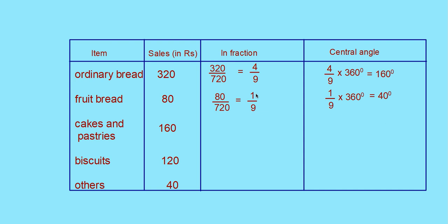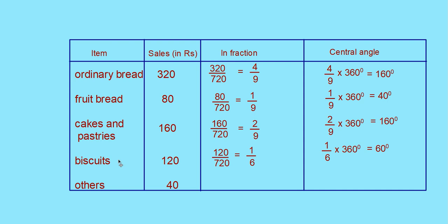Fruit bread: 80 by 720 equals 1 by 9, and 1 by 9 into 360 gives a central angle of 40 degrees. Cakes and pastries: 160 by 720 equals 2 by 9, and 2 by 9 into 360 gives 80 degrees. Biscuits: 120 by 720 equals 1 by 6, and 1 by 6 into 360 gives 60 degrees. Others: 40 by 720 equals 1 by 18, and 1 by 18 into 360 gives 20 degrees.